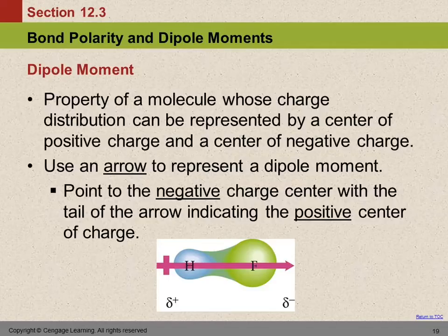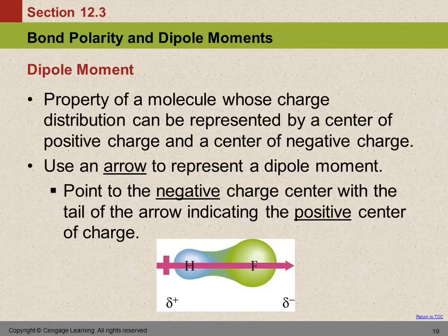We were talking about how in a covalent bond, the electrons are not always shared equally. We talked about electronegativity, which is the idea that some atoms are more attractive in a bond to electrons than other atoms. We looked at the trend in the periodic table. A dipole moment is a property of a molecule whose charge distribution is basically lopsided — there's an imbalance in the positive-negative charge. One way we represent that is using an arrow, and we draw the arrow from the less electronegative atom to the more electronegative atom.